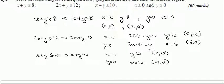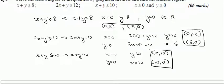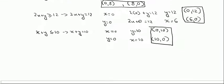We have now identified all the points — two points for each line — to draw them, and we can proceed with the graph. It further states that x is greater than or equal to 0 and y is greater than or equal to 0, which are non-negativity constraints stating that our graph should be in the first quadrant.